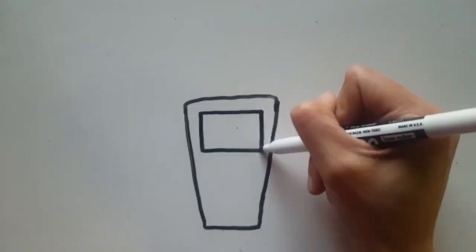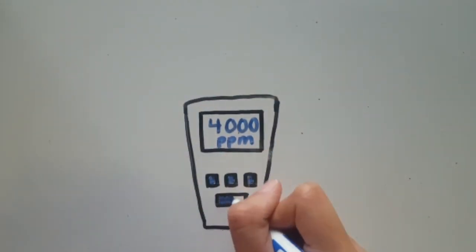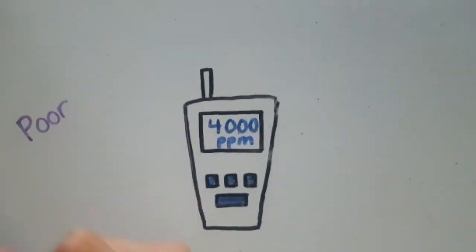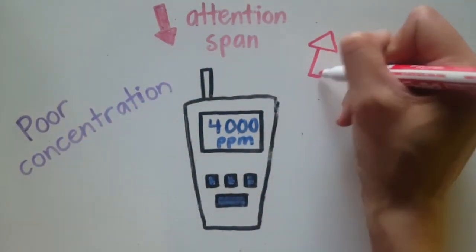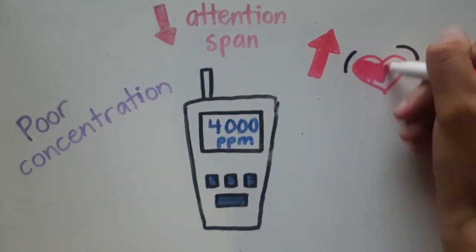We can easily measure these indoor CO2 levels with meters. At a concentration of 2,000 to 5,000 ppm, we may experience headaches and sleepiness, as well as potential attention loss, increased heart rate, and nausea.